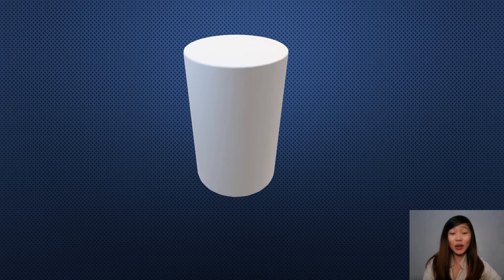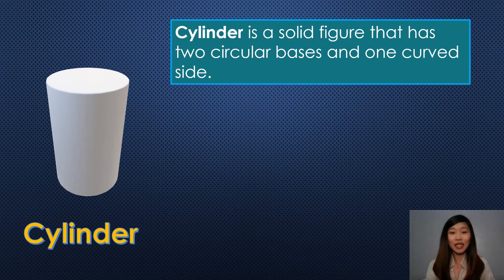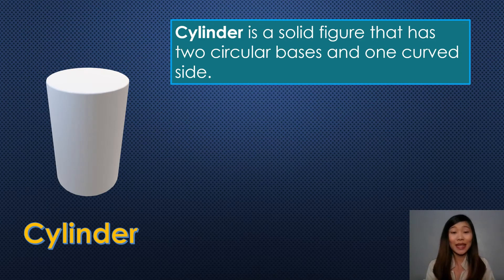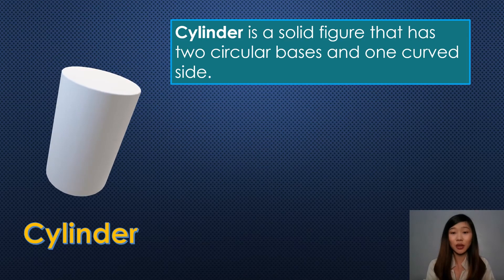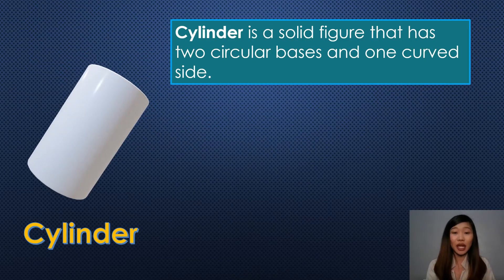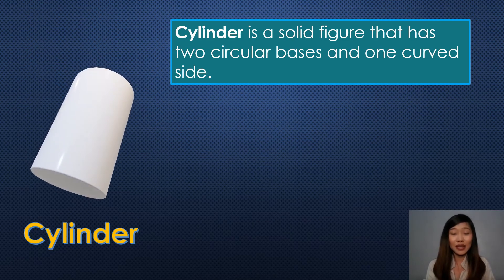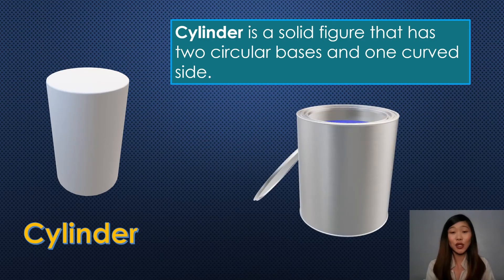Can you guess the name of this figure? This is called a cylinder. A cylinder is a solid figure that has two circular bases and one curved side. A cylinder is similar to a cone, except that rather than only one circular base and a point on the other end, there are circular bases on both ends connected by the curved sides. A cylinder has two faces, zero edges, and zero vertices.